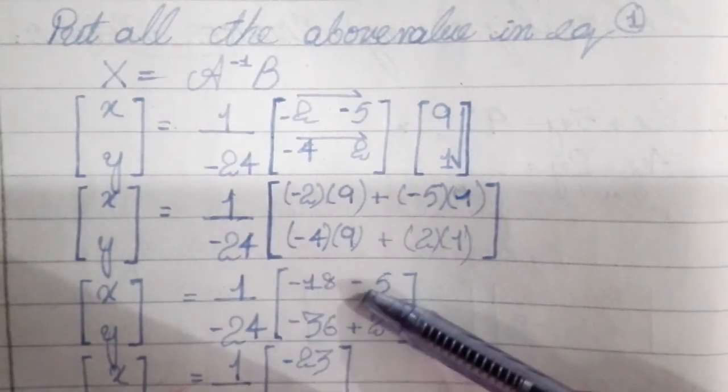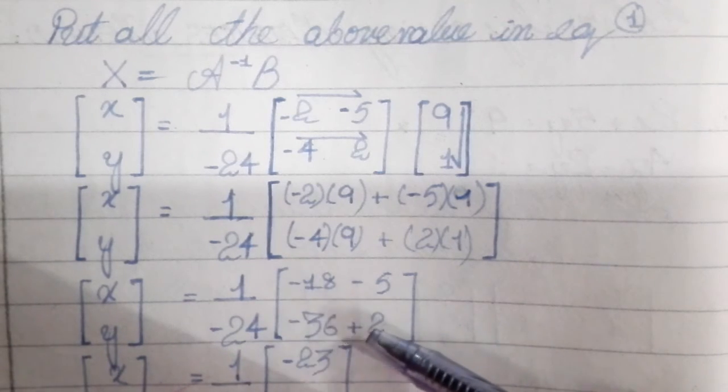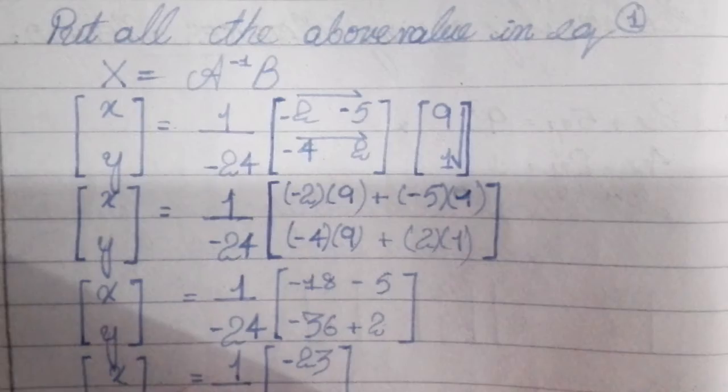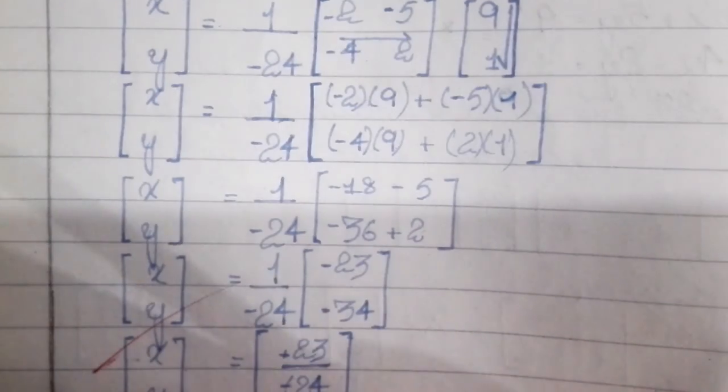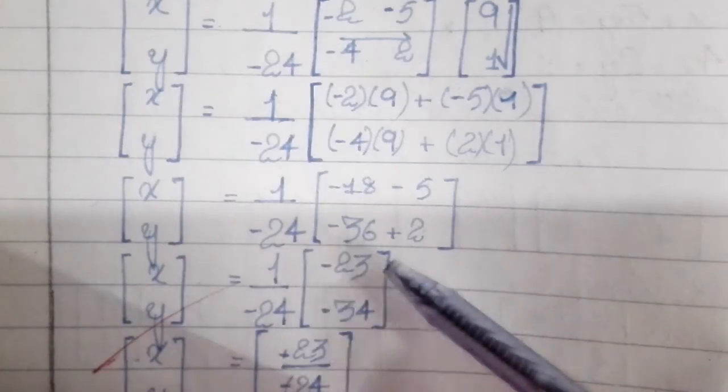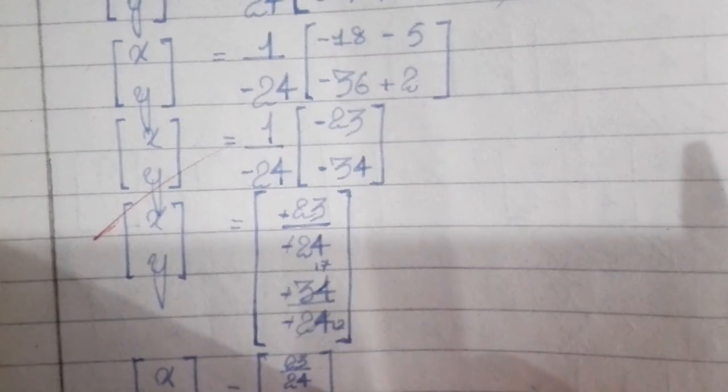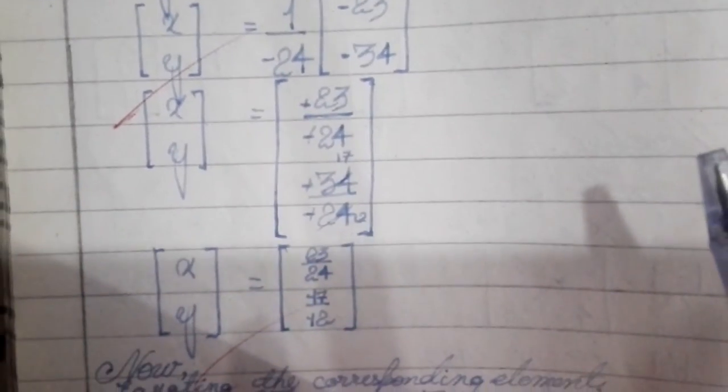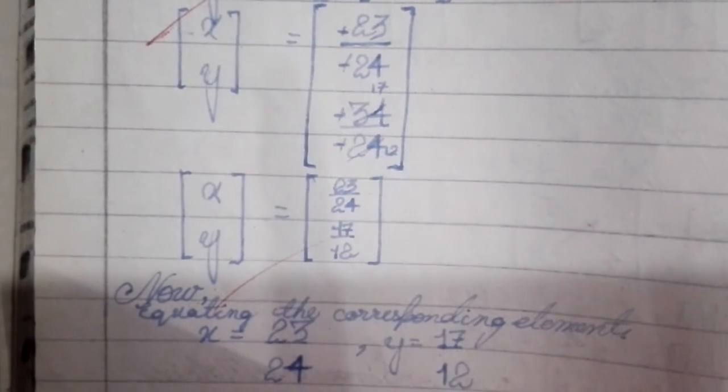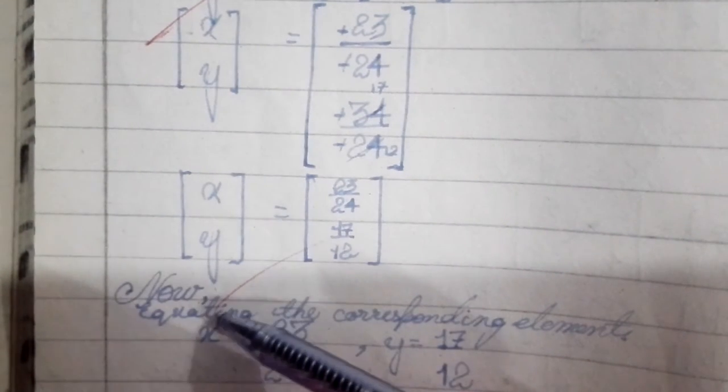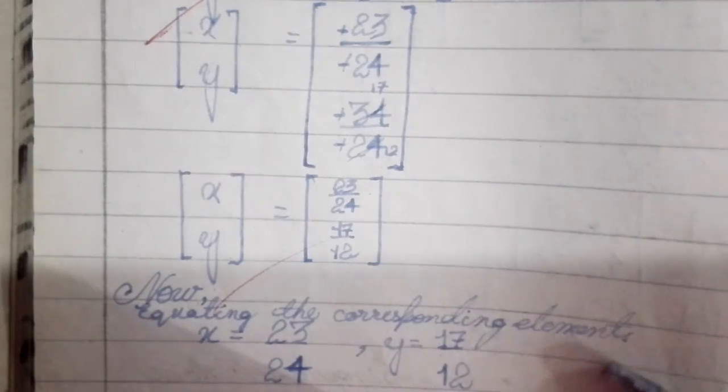Simplifying: minus 18 minus 5, minus 36 plus 2. Then we divide by 24. After dividing by 24, we equate the corresponding elements.